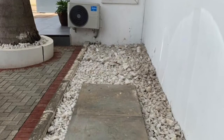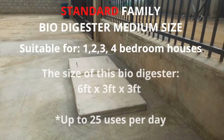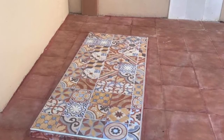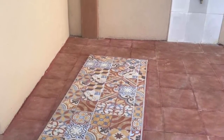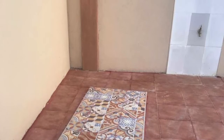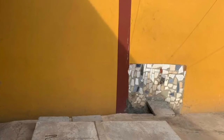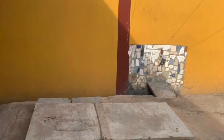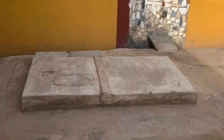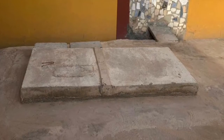The second type of biodigester is the standard family medium size biodigester. This biodigester is quite popular with most homeowners because it sits between the small standard family size digester and the large family size digester. It is designed for one, two, three, or a maximum of four bedroom houses. It solves the problem of choosing between a small or large digester by offering a middle ground, giving families better capacity without worrying about whether the biodigester will serve its intended purpose.